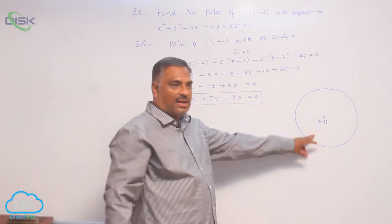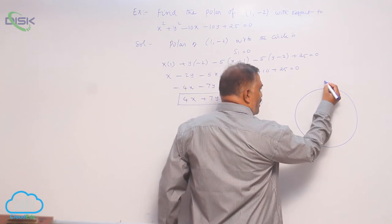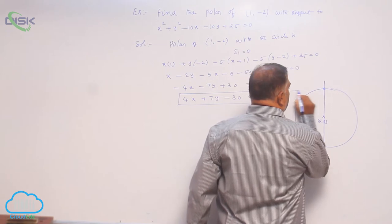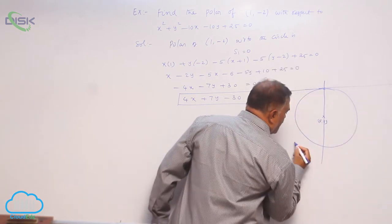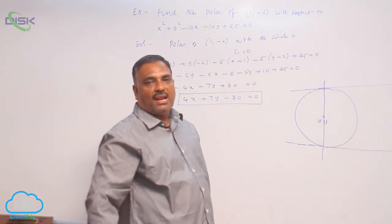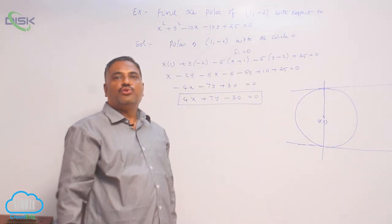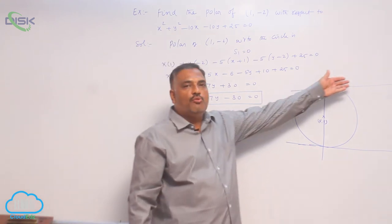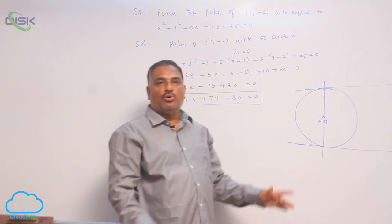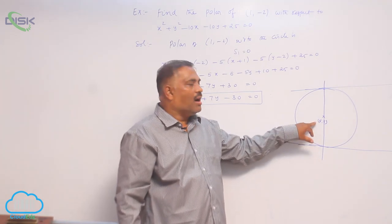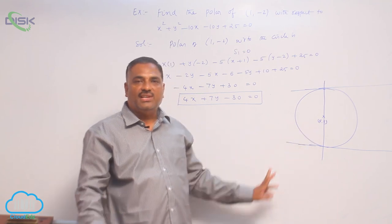If you take the center of the circle and draw any chord like this, now draw the tangent at the end points. These two are nothing but parallel tangents. When parallel tangents are there, there is no chance of getting point of intersection. When there is no point of intersection, no polar exists. So conclusion is: polar of center of the circle does not exist.